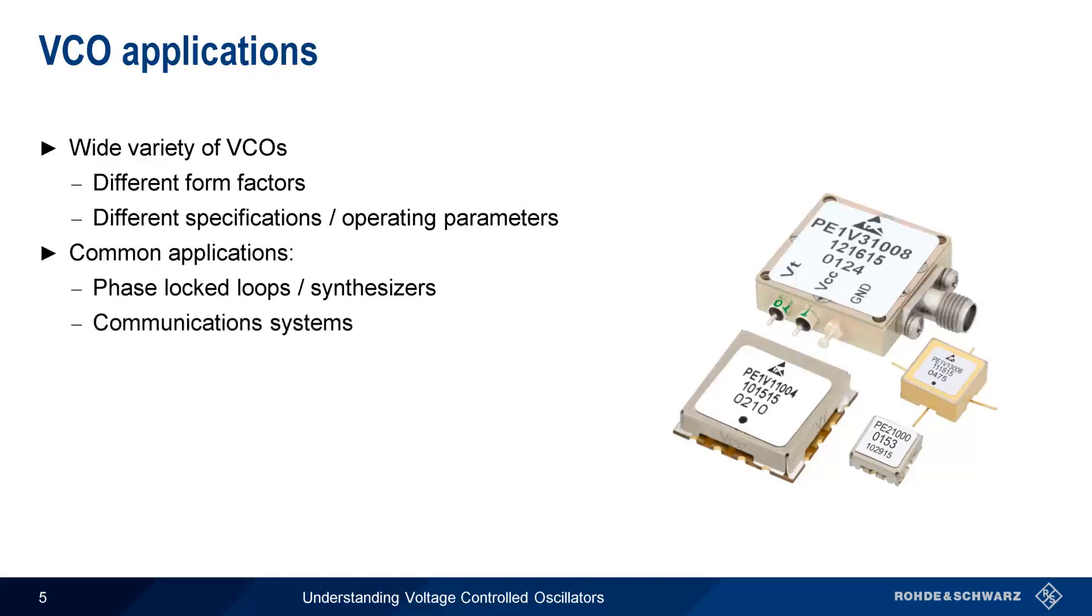They're also often used in communication systems. For example, we can create analog FM modulation by continually varying V-tune. Or we can implement FSK, or frequency hopping, by changing V-tune in discrete steps.